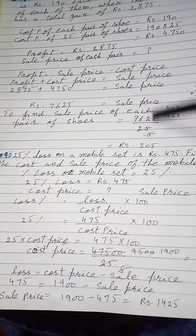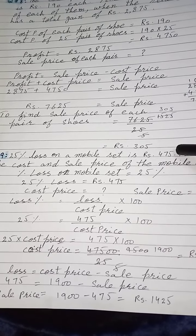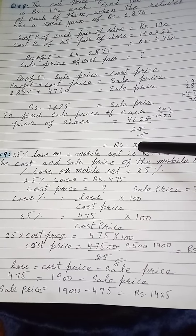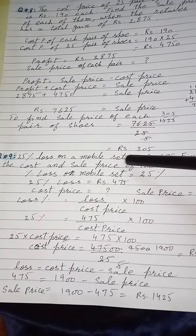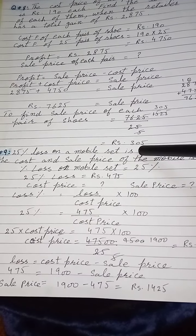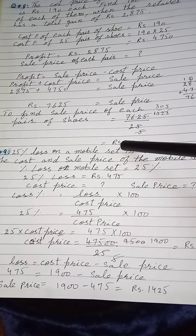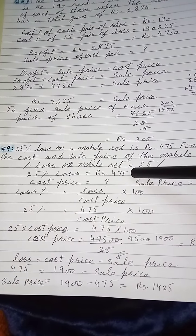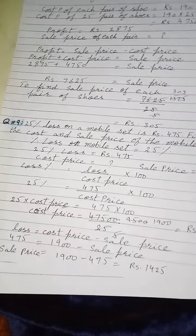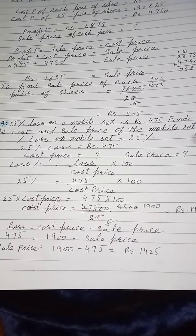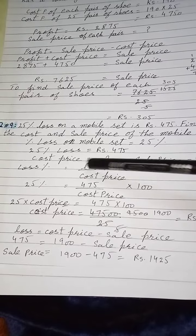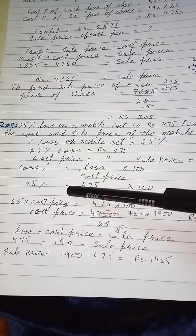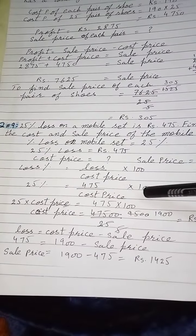Question number 9: loss on a mobile set is rupees 475 اور loss کی percent 25 ہے۔ Find the cost and sale price of the mobile set۔ Given information: percent loss 25%، loss amount 475 روپیز۔ Cost price اور sale price دونوں find out کرنی ہیں۔ Formula: loss percent is equal to loss divided by cost price multiplied by 100۔ Loss percent اور loss price given ہے، values put کریں۔